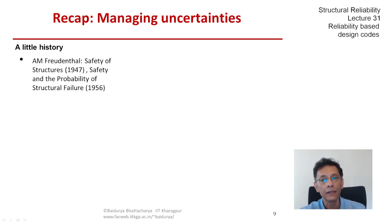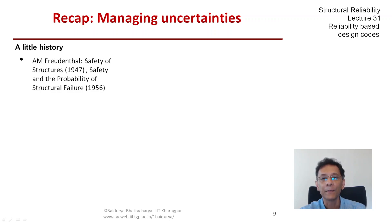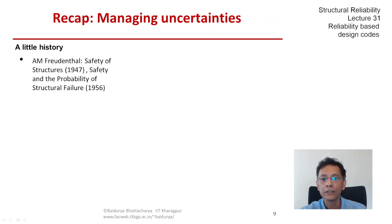He made a clear distinction between life safety and serviceability targets. And in the end he suggested a compromise that would become known as the calibration of target reliability, when the first reliability-based structural design codes were to be developed and published about two decades later.